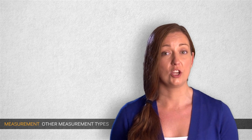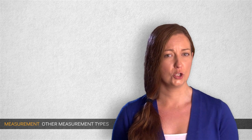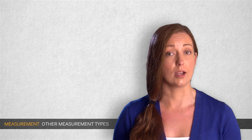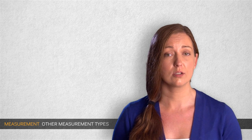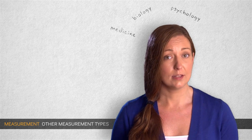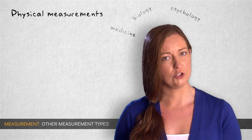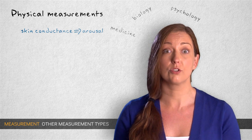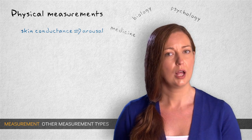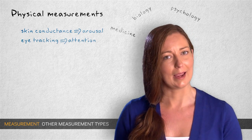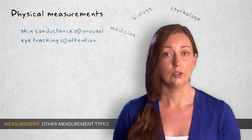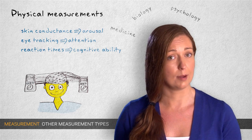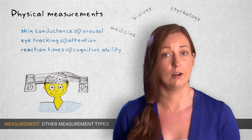I've focused on measurement using questionnaires, surveys, and tests, but of course there are many other ways to measure social and psychological constructs. In biology, medicine, and psychology, physical measures are very common. Think of things like electrical skin conductance to measure arousal, eye tracking to measure focus of attention, EEG and fMRI to register brain activity, and reaction times to assess cognitive ability.